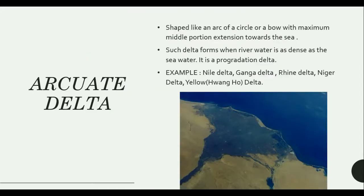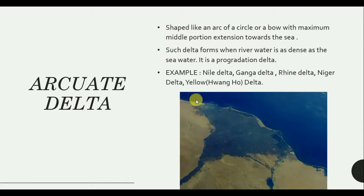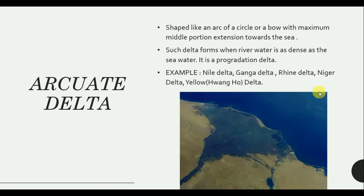Now let's talk about Arcuate Delta. As you can see in the picture, it is shaped like an arc of a circle or a bow, with a maximum middle-portion extension towards the sea. Such deltas form when river water is as dense as the sea water. Examples include the Ganges River, the Rhine River, and the Nile River — mostly very long-course rivers form Arcuate Deltas.